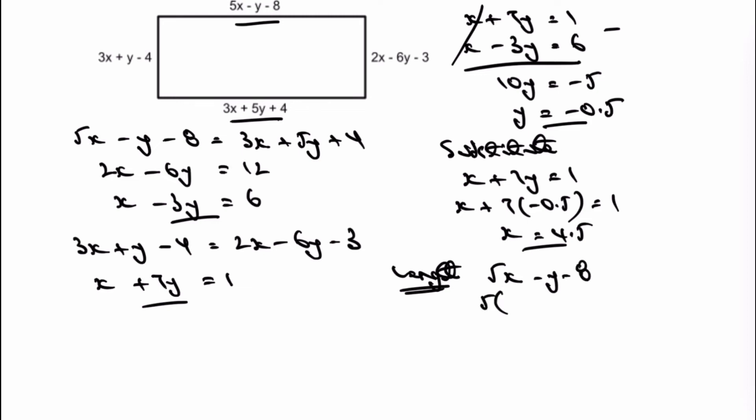And that's going to give me 5 times 4.5 minus, and again, be very careful, it's a negative 0.5 and then negative 8. And that should give me a length equal to 15 centimeters. And that's my first answer.